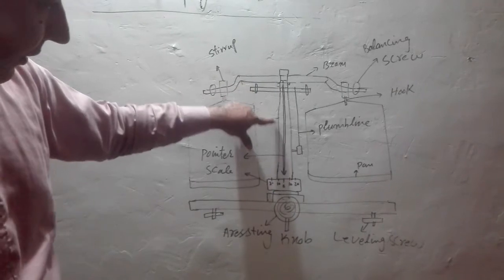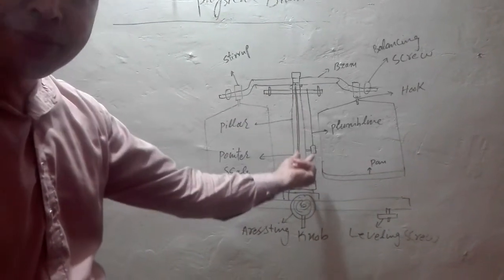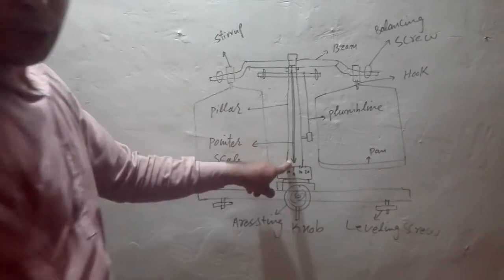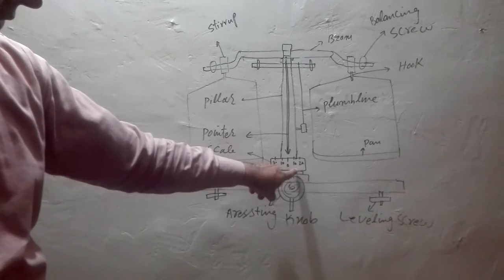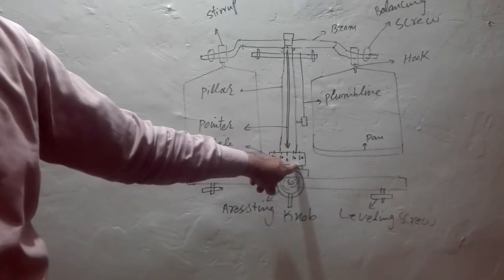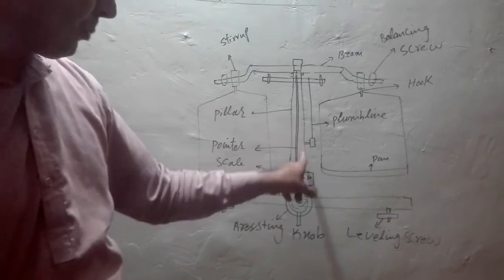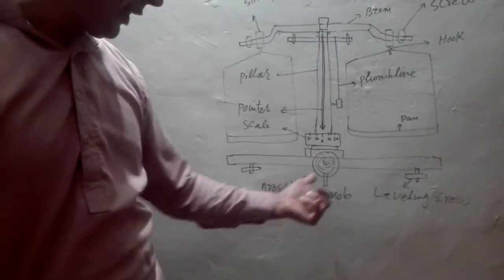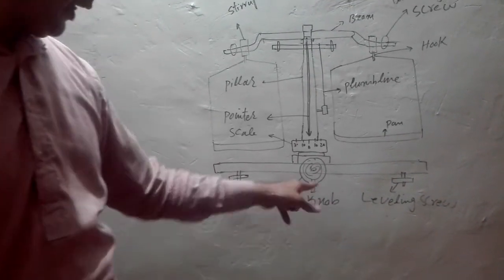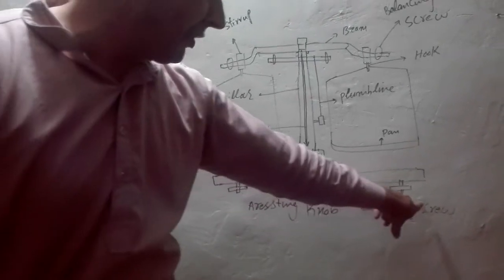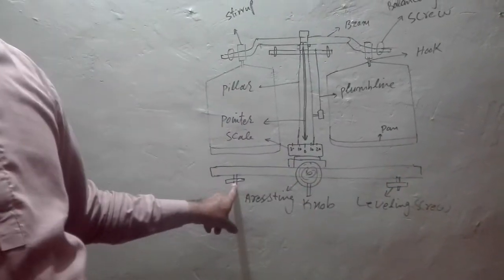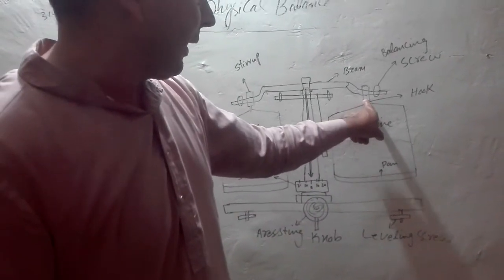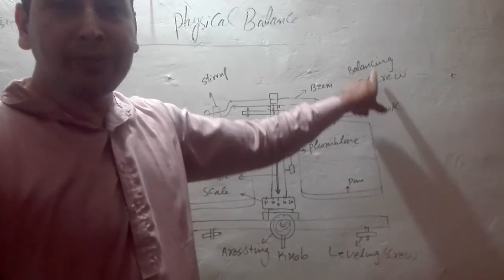This part is written as pillar. In the pillar, it contains a pointer. You can see this arrow is pointing to the scale. Down there is a scale, made generally of steel. Below the pointer is an arresting knob. After the arresting knob, there are two leveling screws. And this is the hook. And these are the balancing screws.